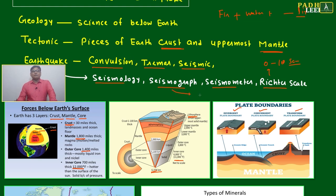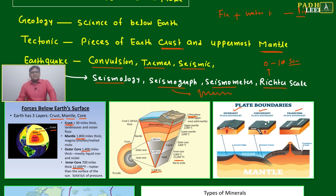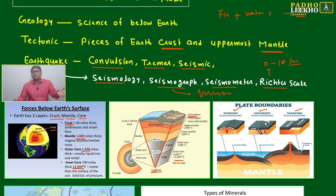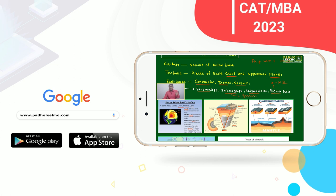A seismograph works like an ECG for human beings — it records measurements based on pressure from seismic activity. Seismologists regularly study the seismograph readings of different regions, similar to how meteorologists study weather, and based on that data they are able to predict which areas may experience earthquakes.